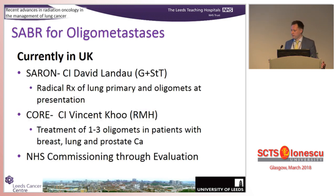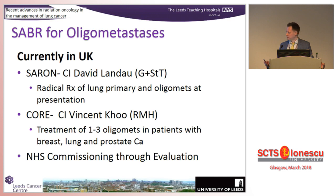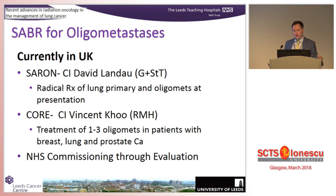In the UK, we currently have a number of trials trying to answer this question. SABER, led by David Landau, is for patients who present with a potentially curable tumour but have up to three oligometastases at presentation - the standard of care is chemotherapy, but the experimental arm is chemotherapy followed by radical treatment of the primary plus stereotactic radiotherapy to metastases. CORE is for patients who've had radical treatment - including breast, lung, and prostate cancer - comparing chemotherapy or palliative radiotherapy versus stereotactic radiotherapy to the oligometastases. We're also running an ongoing prospective audit called the Consolidation Through Ablation Programme to gather high-level evidence for stereotactic radiotherapy in oligometastasis.